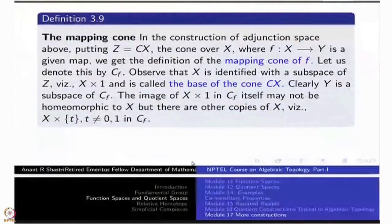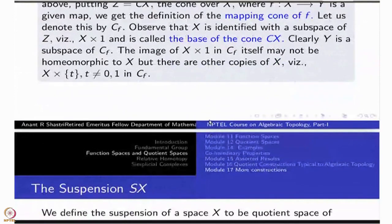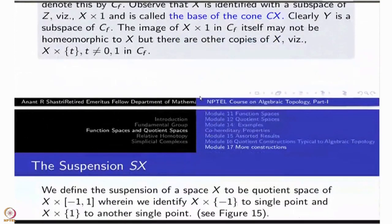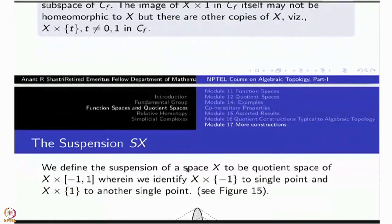The next construction is also very useful, which is just doubling the cone. The cone is defined as the quotient of X cross I, wherein you have identified X cross {0} to a single point.